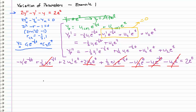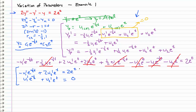So we can rewrite what remains as: negative u1 prime e to the negative one-half t plus 2 u2 prime e to the t equals 2e to the t. Combined with our constraint equation — u1 prime e to the negative one-half t plus u2 prime e to the t equals zero — we have two equations and two unknowns. Adding them together gives 3 u2 prime e to the t equals 2e to the t, so u2 prime equals two-thirds. Integrating, u2 equals two-thirds t. We are not tracking constants of integration since they will be absorbed into the arbitrary constants later.